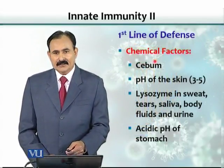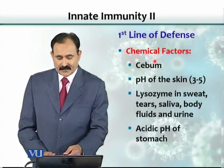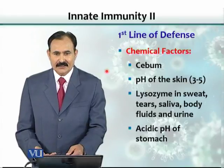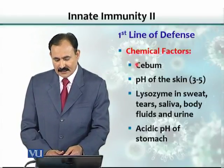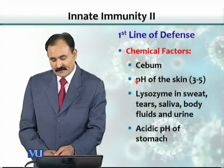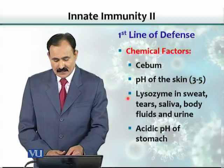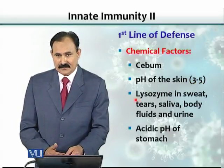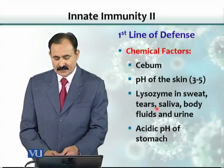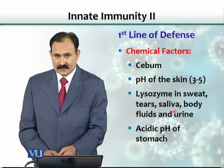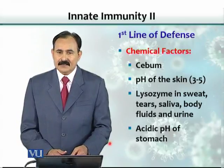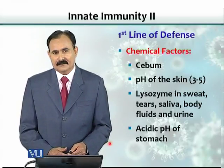In addition to physical factors, there are chemical factors. Sebum is an oily secretion of the skin glands with a low pH due to fatty acids — skin pH is around 3 to 5. There are also lysozymes, an enzyme produced in body secretions like sweat, tears, saliva, and other body fluids such as urine. The acidic pH of the stomach is another example. These are all chemical factors that prevent infections.